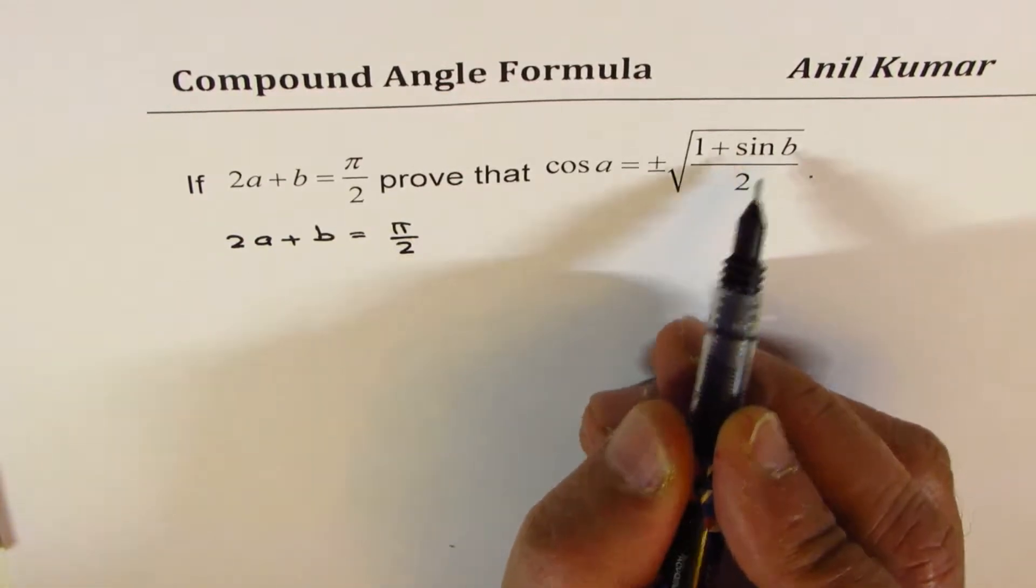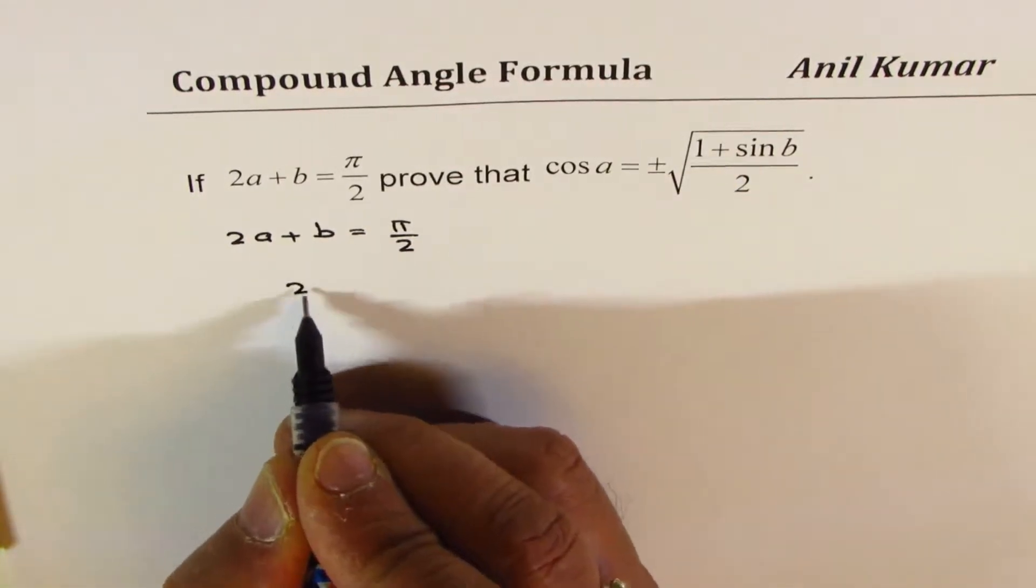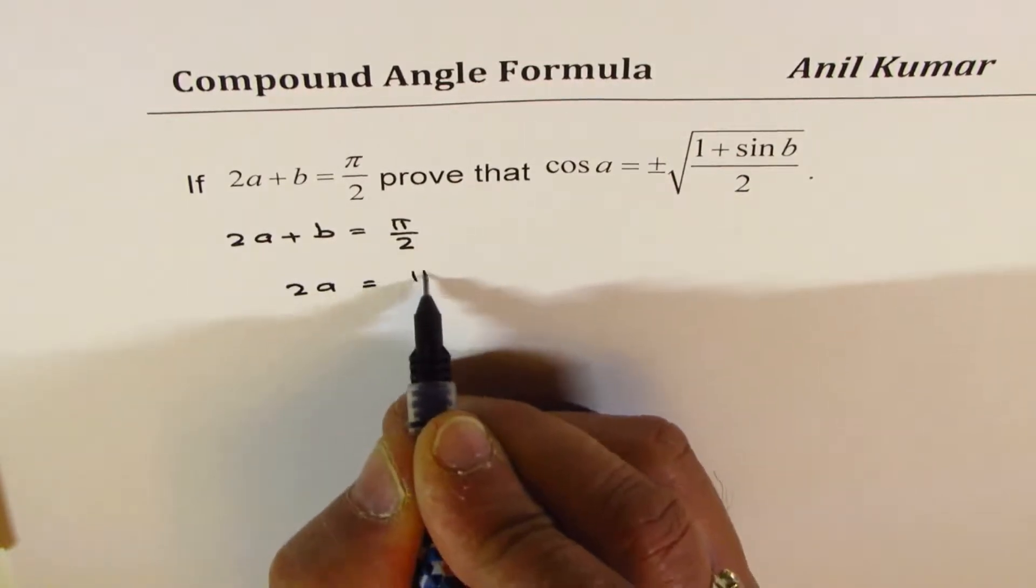So I'm going to rearrange it. I'll write this as 2a equals pi by 2 minus b.